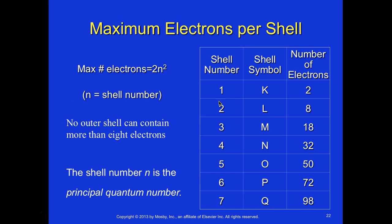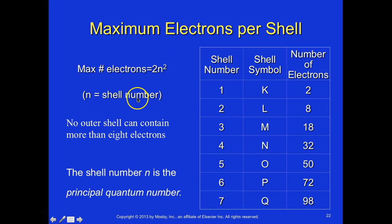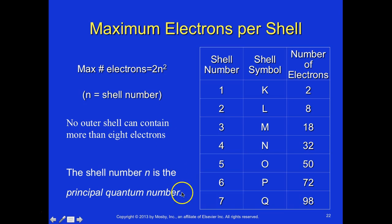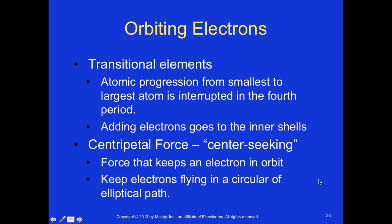The maximum number of electrons per shell is 2 times N squared, where N is the shell number. No outer shell can contain more than 8 electrons. The shell number N is the principal quantum number. In shell 1, the K shell, the maximum number of electrons is 2. With orbiting electrons and transitional elements...